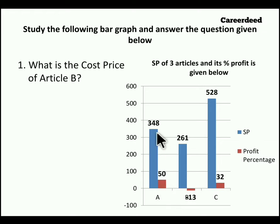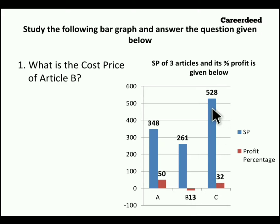If you take article A, 348 rupees is the selling price and profit percentage is 50. For article B, 261 is selling price and profit percentage is given in minus — so minus means the transaction is a loss. If you take article C, 528 is selling price and 32 is profit percentage. If you have watched my videos on profit and loss, this problem is going to be simple. Let me explain the same concept one more time. Cost price is always 100 percentage.